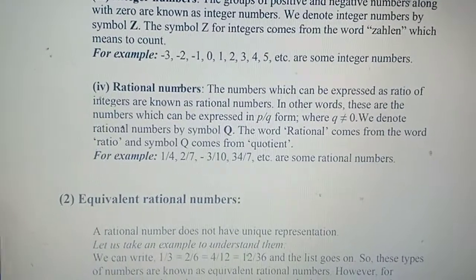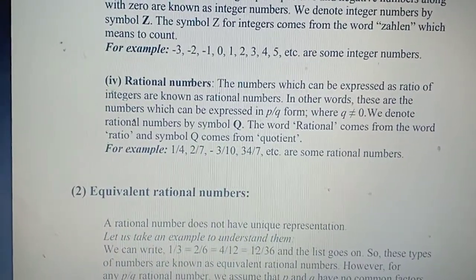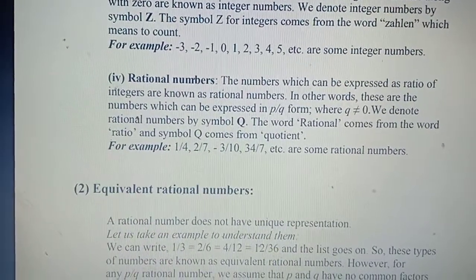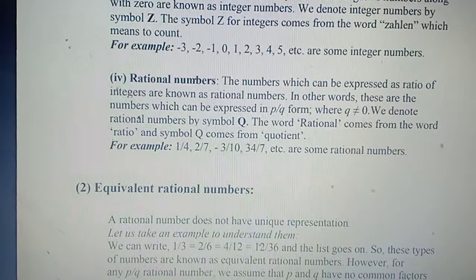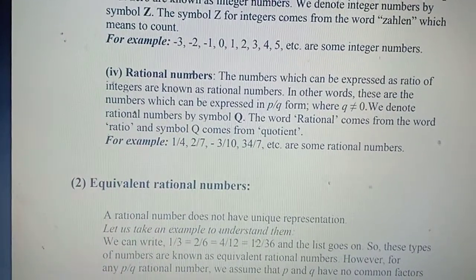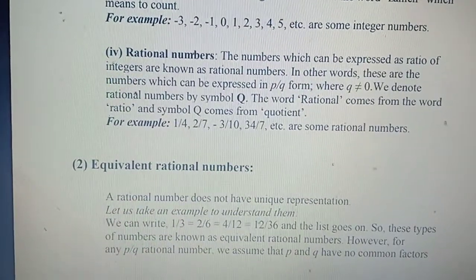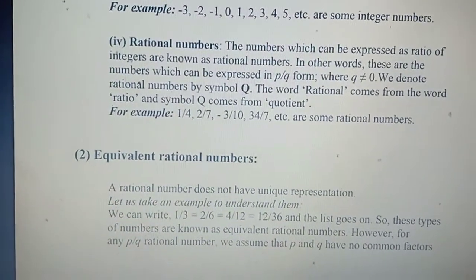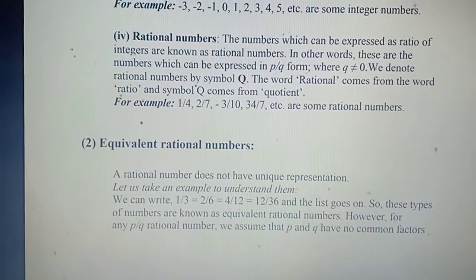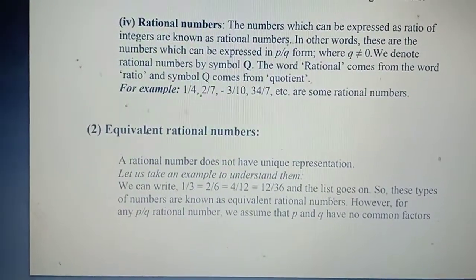Then we come to rational numbers. The numbers which can be expressed as a ratio of integers are known as rational numbers. In other words, these are numbers which can be expressed in P by Q form, where Q is not equal to 0. We denote rational numbers by the symbol capital Q. The word 'rational' comes from the word 'ratio,' and the symbol Q comes from 'quotient.'